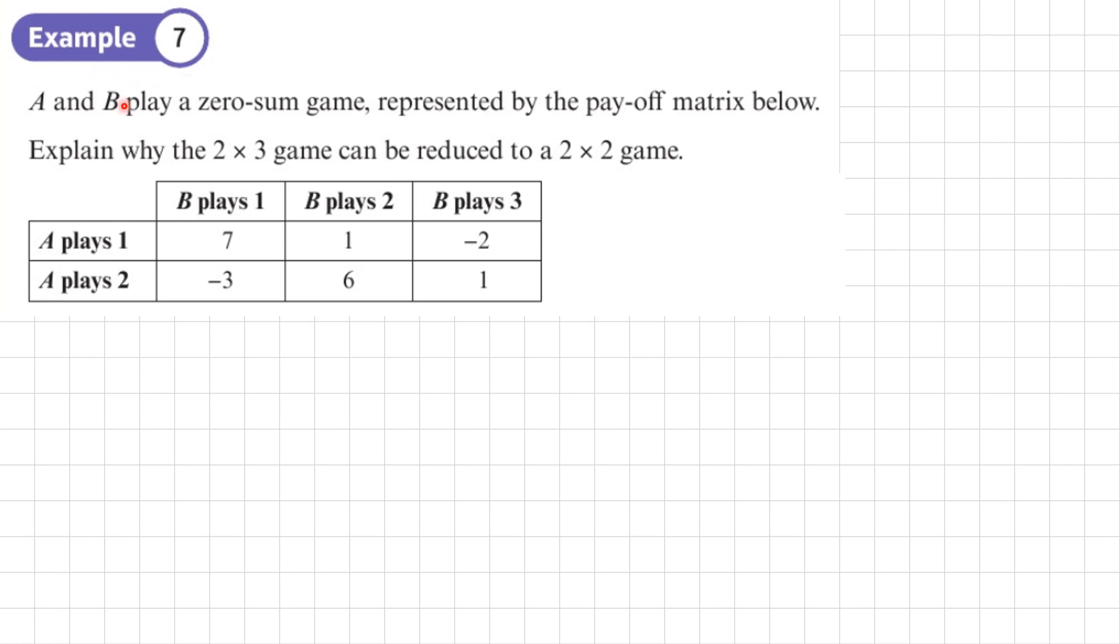Example 7. A and B play a zero-sum game represented by the payoff matrix below. Explain why the 2×3 game can be reduced to a 2×2 game. So if it's going to be reduced to a 2×2 game, that means we're going to be deleting a column, not a row. Because if we were deleting a row, it would be a 1×3 game.